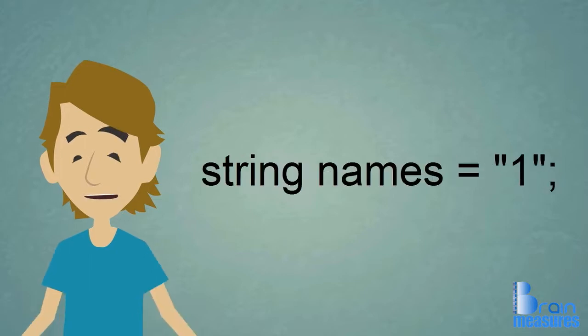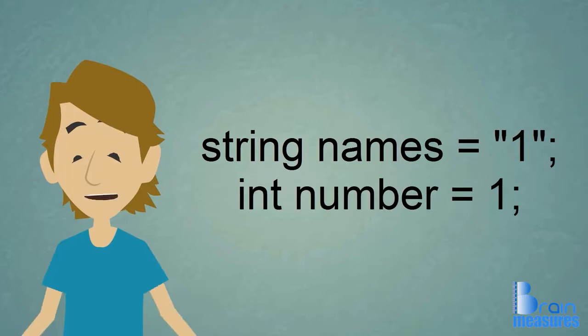What happens if we put a number in a string? It is exactly like an int. If you were to print the variable names to the screen, it would display a one. If you were to print the variable number to the screen, it would also display a one. So are these two values the same?